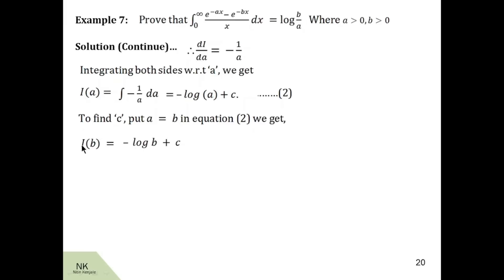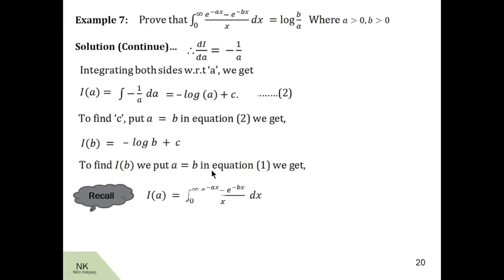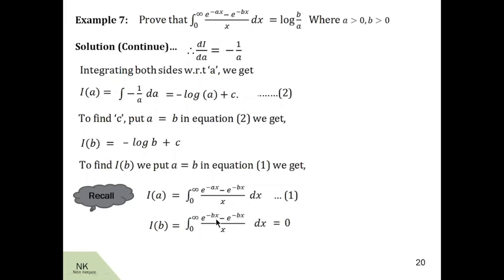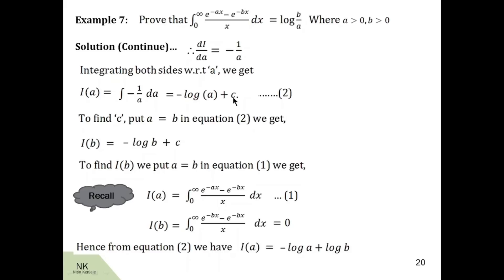Now let us calculate the value of i of b from equation number 1. Substituting a equal to b into equation 1, we get i of b equal to the integral of e raised to minus bx minus e raised to minus bx, that is 0, upon x dx. Since 0 upon x is 0, the integral of 0 is 0. Therefore i of b is 0. Substituting this value gives c equal to log b. Now substituting c equal to log b into equation number 2, we see i of a equal to minus log a plus log b, that is log of b by a, which is the required RHS. Hence this statement is proved.